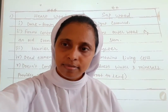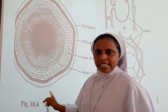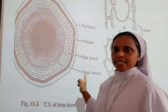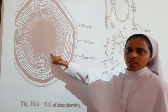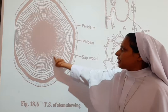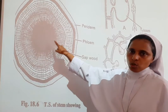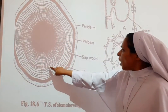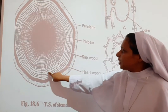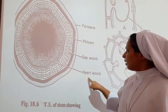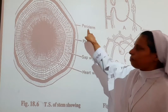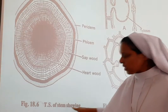Moving forward, we have seen the differences between hardwood and sapwood. Now you can see the image of the transverse section of the stem showing sapwood and hardwood. The dark region at the center is the hardwood, and the lighter outer region forms the sapwood. You can also see the phloem and periderm in this section.